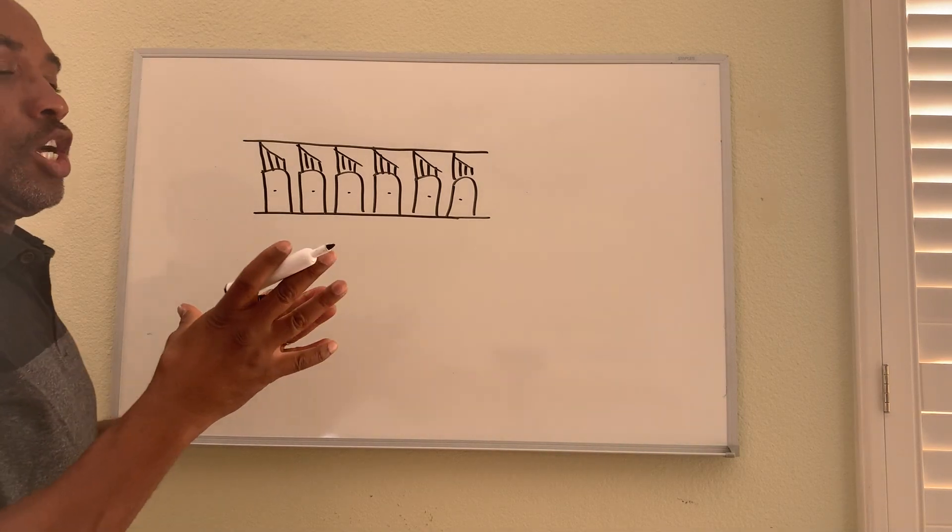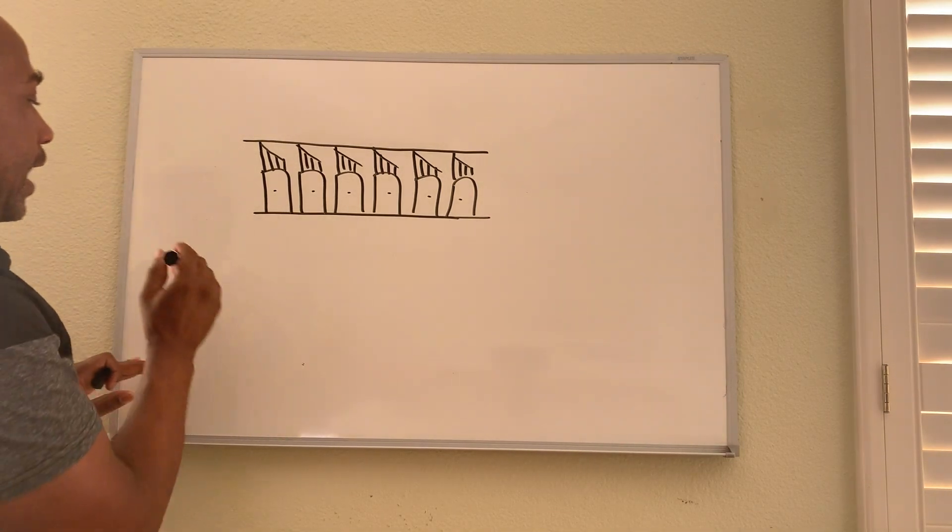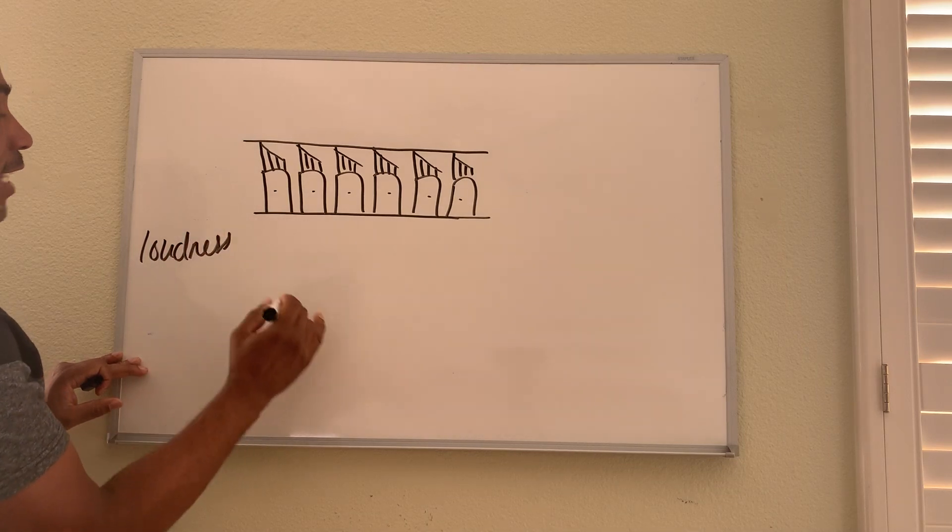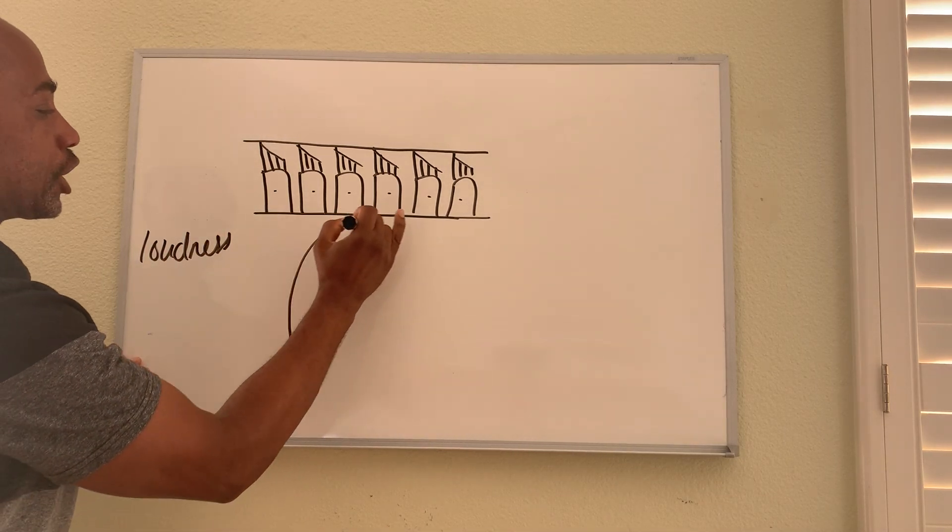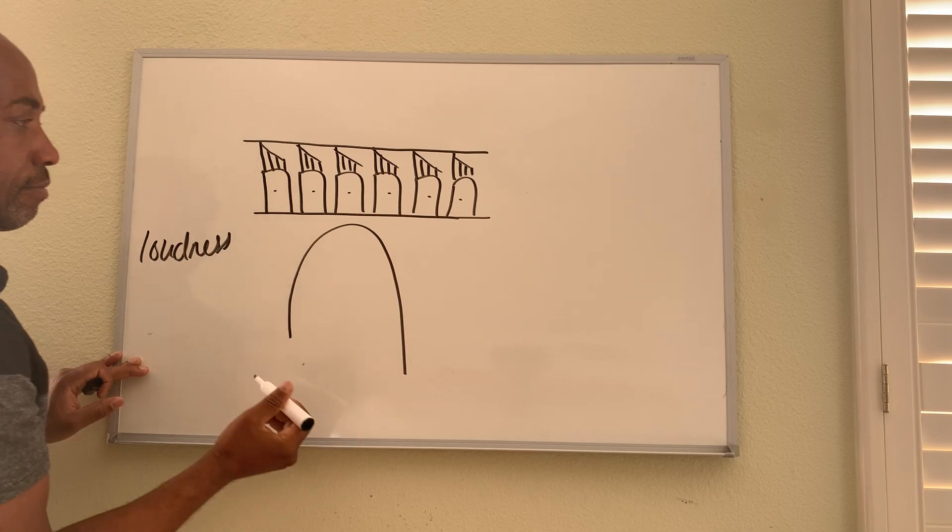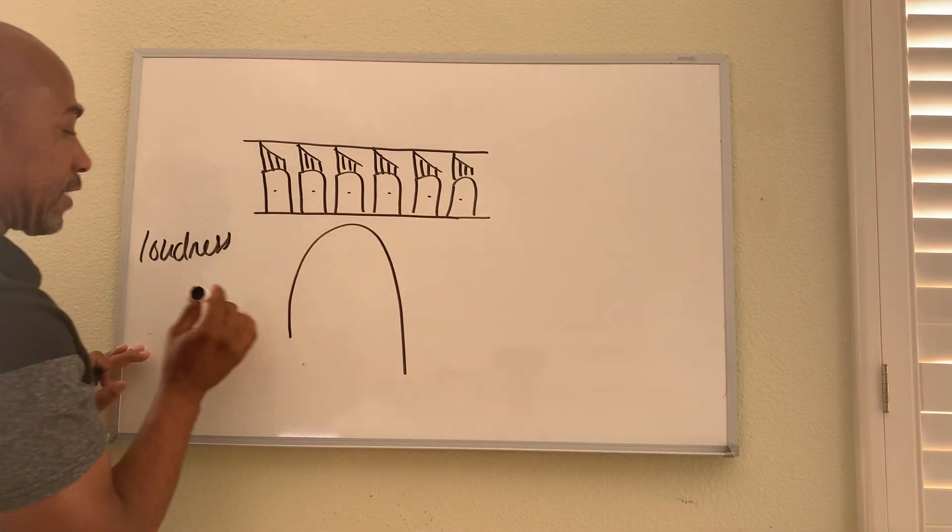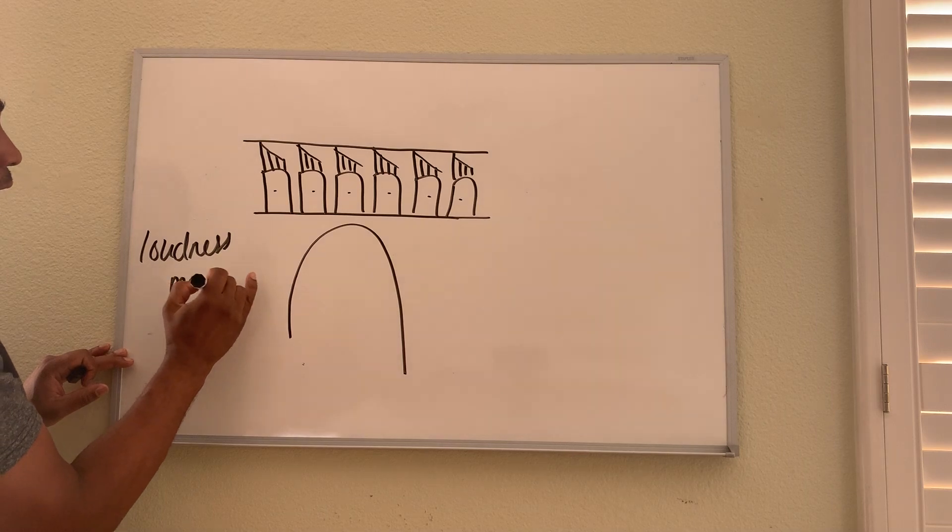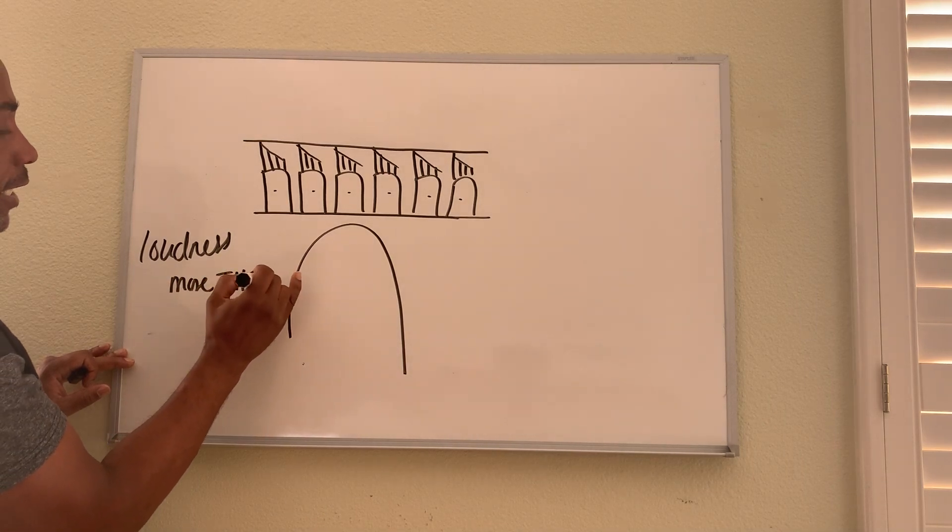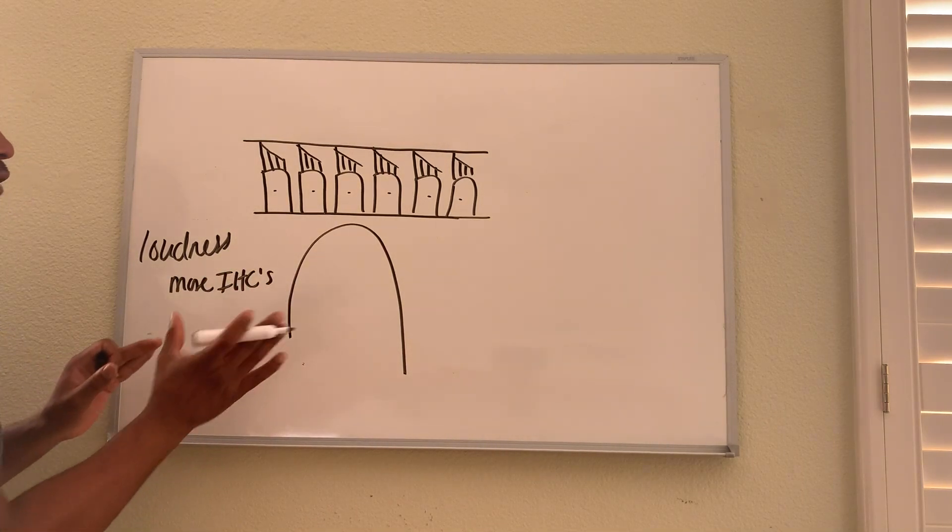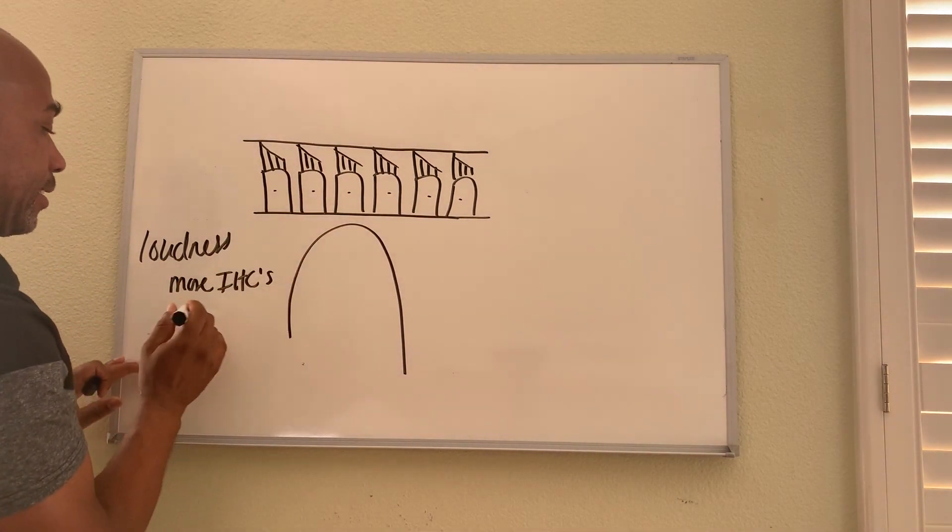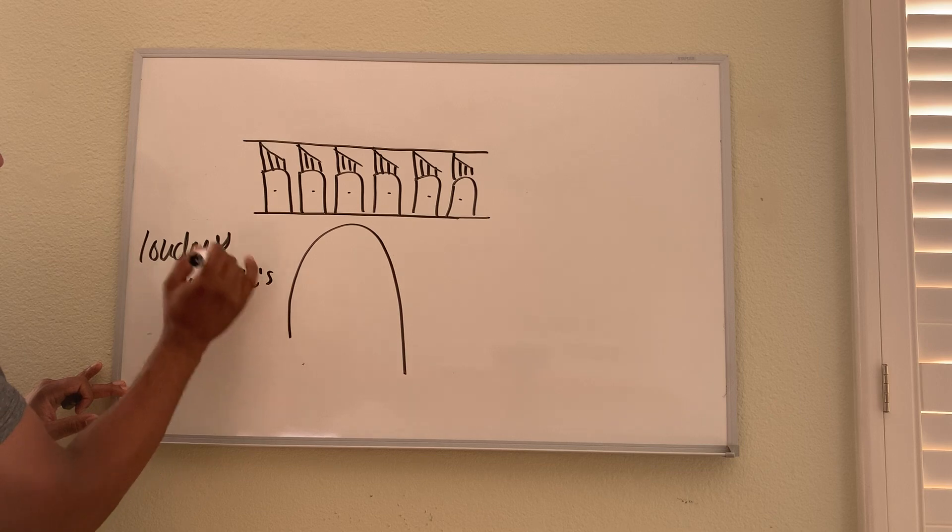They're attached to the tip links and anchored into your overlying tectorial membrane. When you have loud sounds, loudness creates bigger vibrations of the membrane and more cells are activated. So when you have a loud sound, more inner hair cells are involved because of the bigger vibration, and softer sounds activate less.